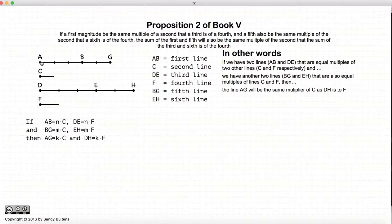In other words, AG will be equal to a constant times C and DH will be equal to the same constant times F. So this here is the proposition.